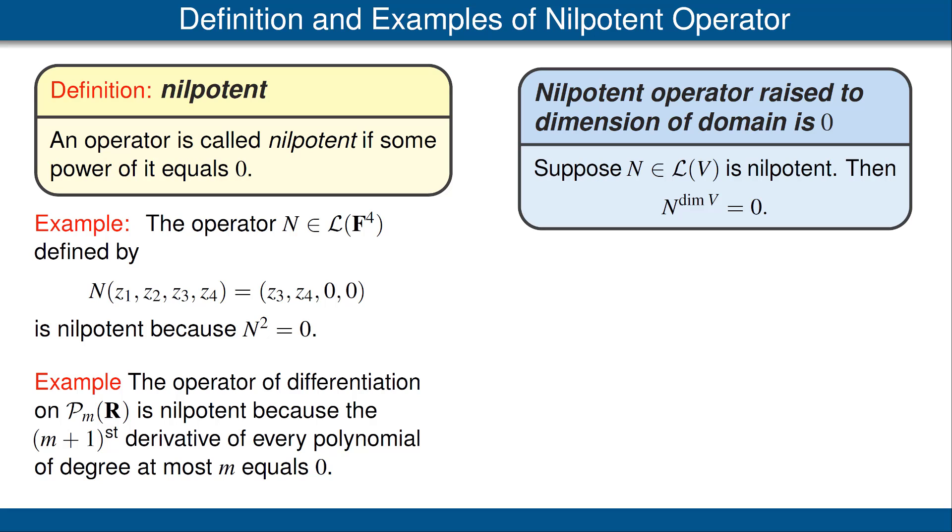But we've seen previously that the null space doesn't get any bigger than raising the operator to the power, the dimension of the vector space. That gives the result shown here.